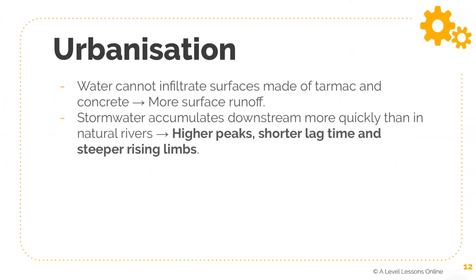The last factor is urbanization — a human-related factor. Water cannot infiltrate surfaces made of tarmac and concrete, which reduces infiltration capacity. This leads to more overland flow and surface runoff, and storm water accumulates downstream more quickly than in natural rivers. This results in higher peaks, shorter lag times, and steeper rising limbs. This is why floods in cities — for example, Singapore floods — are often caused by concrete and tarmac preventing rapid infiltration, causing rivers to reach peak discharge very quickly.